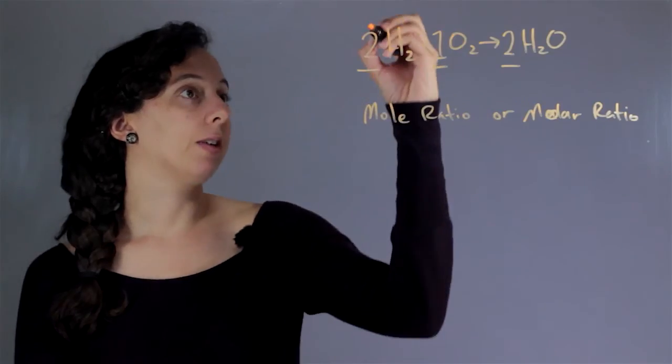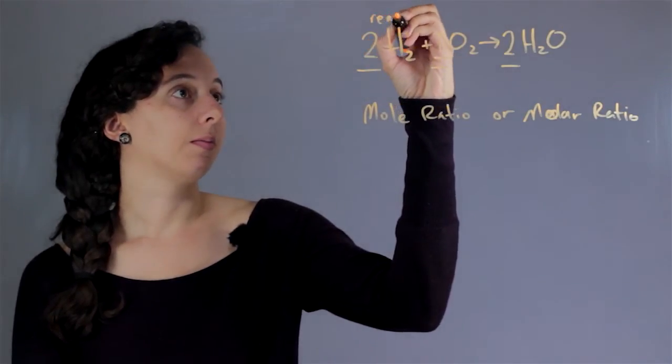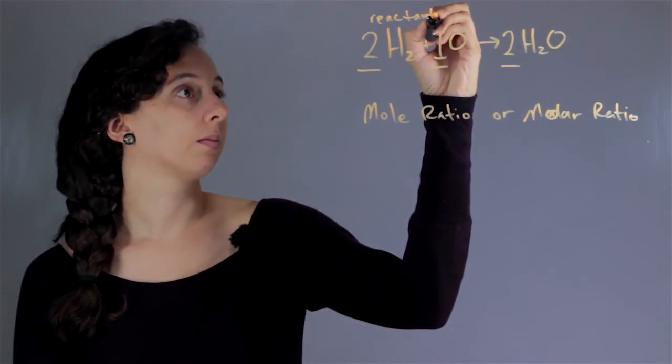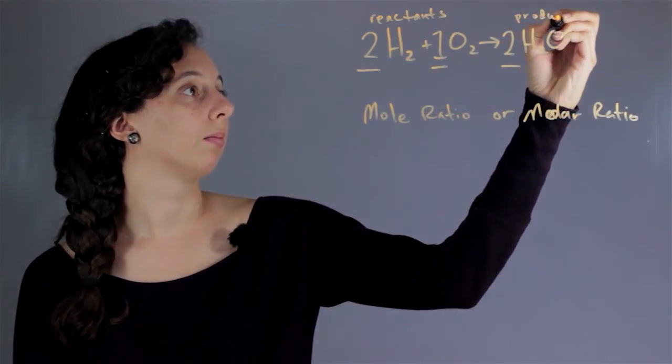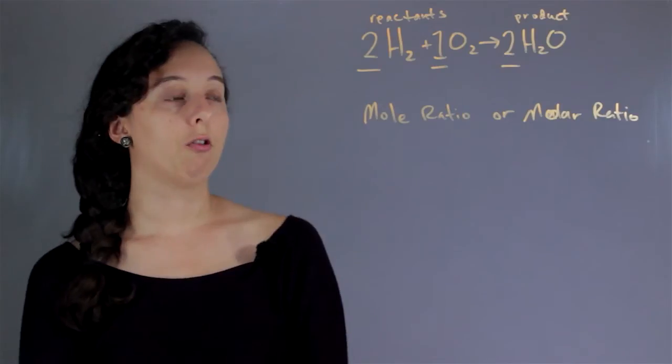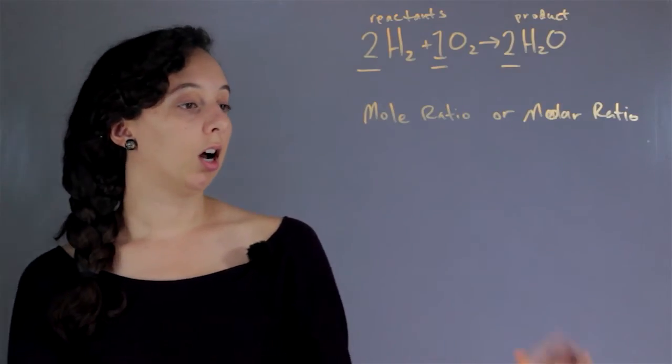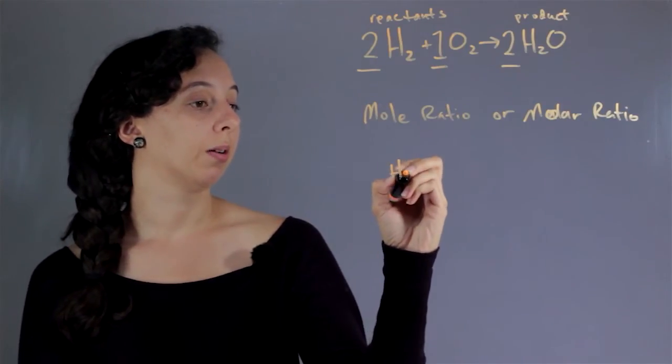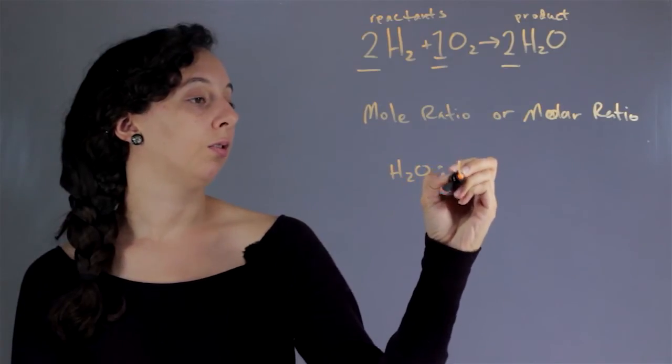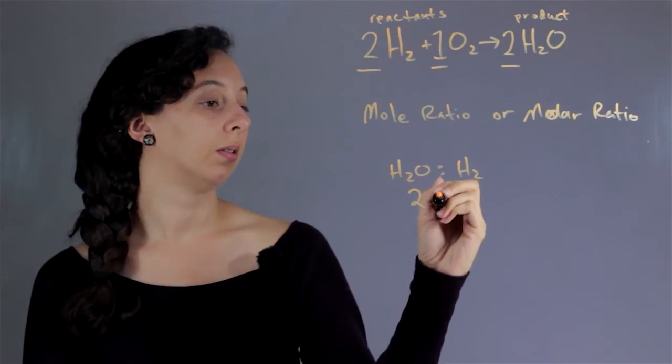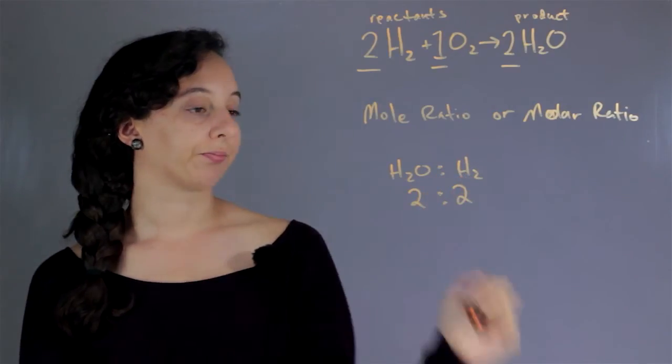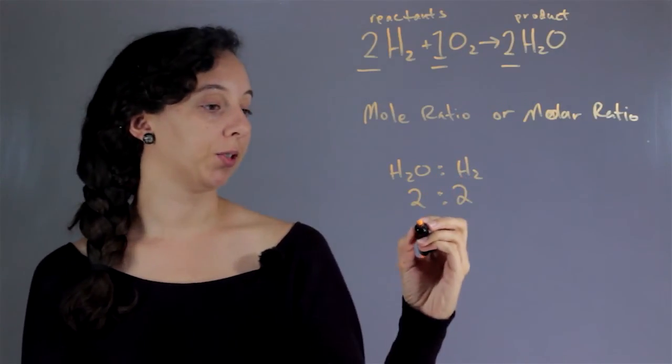So remember, over here we have the reactants. And this is the product. So if we want to look at the ratio of water to hydrogen gas, well, it's going to be two to two, we can reduce that. So it's one to one.